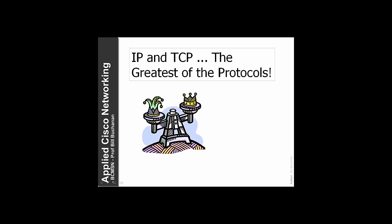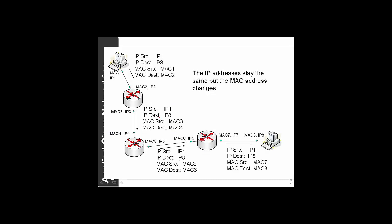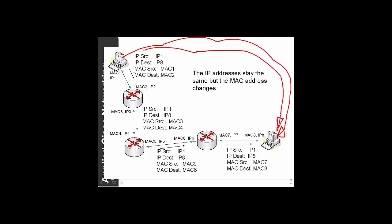So how does the internet actually work, and how is it that computers can add and delete themselves from the internet and other destination nodes can find them? Basically, when this machine wants to talk to another machine, it does not need to know the MAC address of the destination — it would be too difficult to find that out. So it puts its own IP address in the source and the destination IP address of the destination node, then adds its own source MAC address. Through ARP, it has already discovered the MAC address of the gateway, so the first data frame that goes out has the destination MAC address of the gateway port of the router.